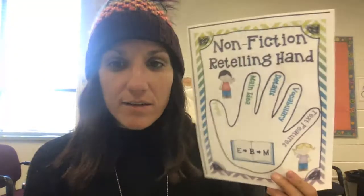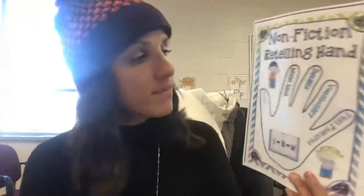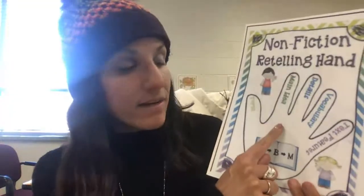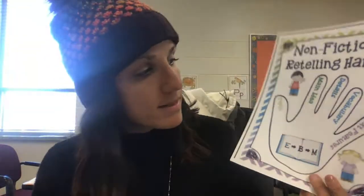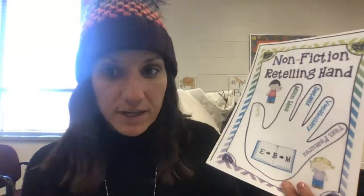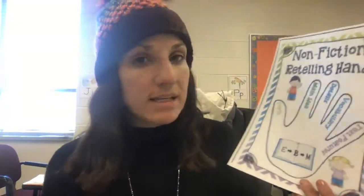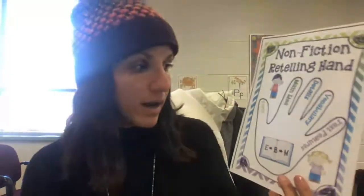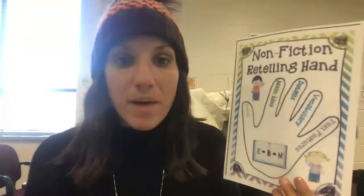There is a non-fiction retelling hand. This is something I would like you to use with your child as you are reading books with them. You want them to name the topic, the main idea of the book, three details, and some other vocabulary, details, or text features. Text features are anything like the captions, the labels, the diagrams. We really want your child to look at those pictures and understand that that gives them information about the topic.